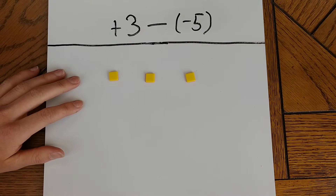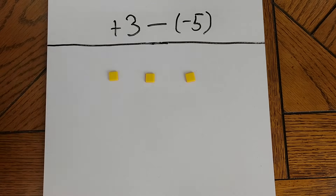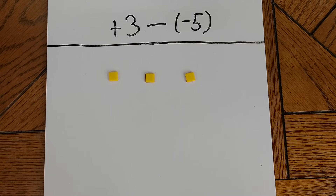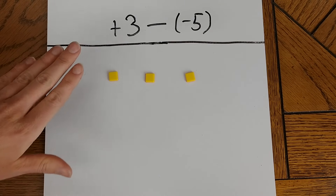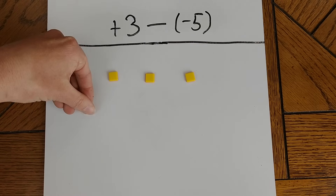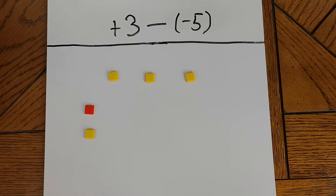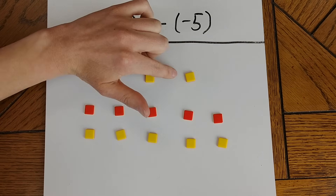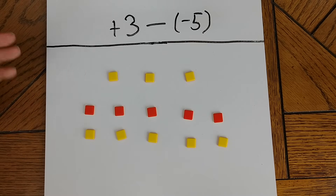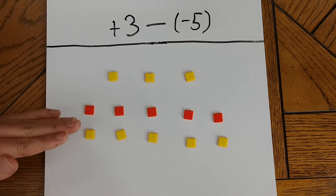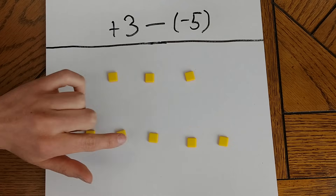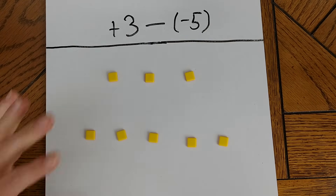If we wanted to represent taking away negatives with the tiles, we would want to remove red tiles. But I don't have any red tiles on my board right now. However, I do have a way of adding red tiles to the board without changing the value of the number — if for every red tile I add, I also add a yellow tile to cancel out its value. Now the total value on the board is still positive 3 because all the rest of these tiles cancel each other out. Now I'm going to take away 5 red tiles. This leaves me with 8 yellow tiles, or positive 8.